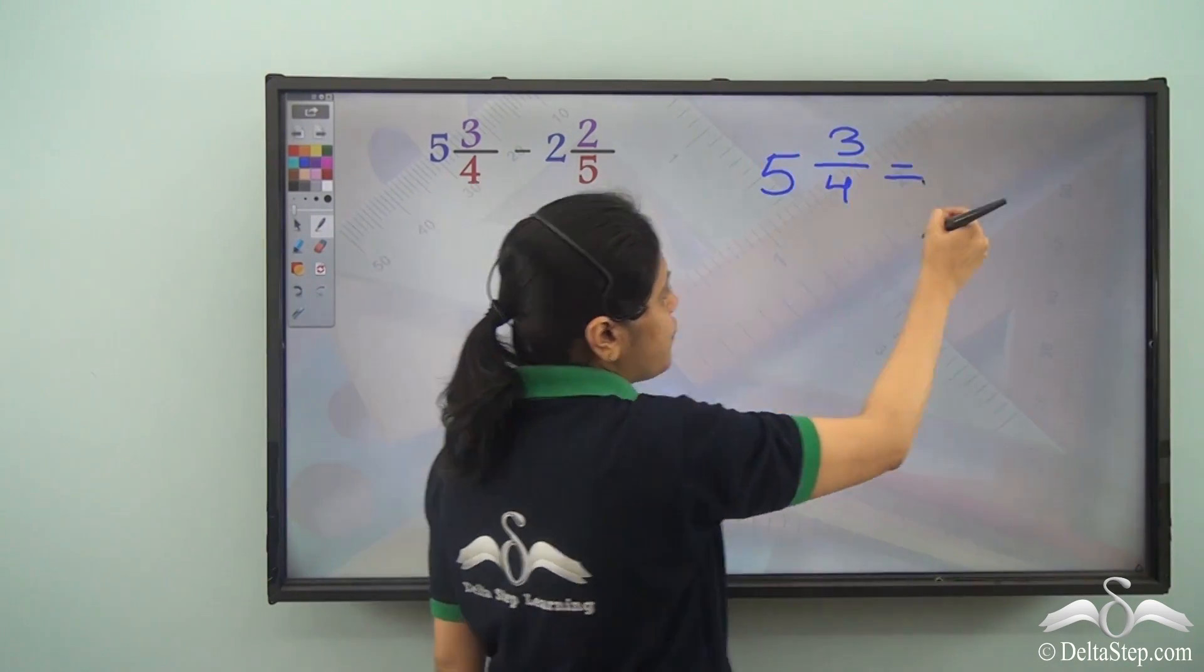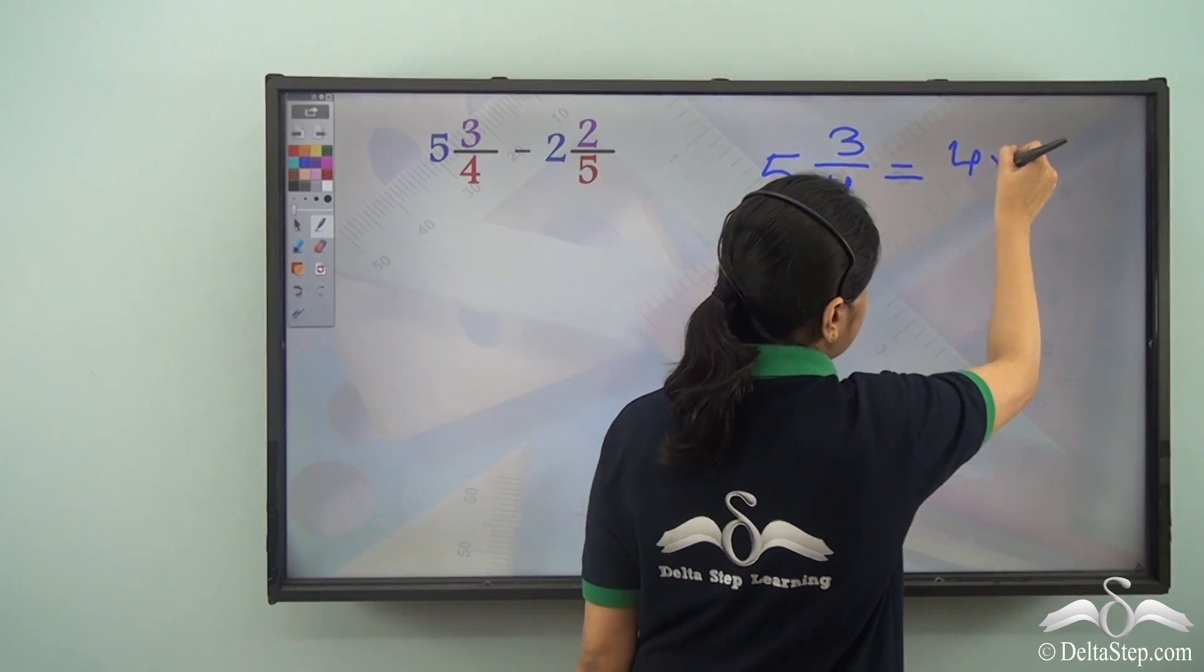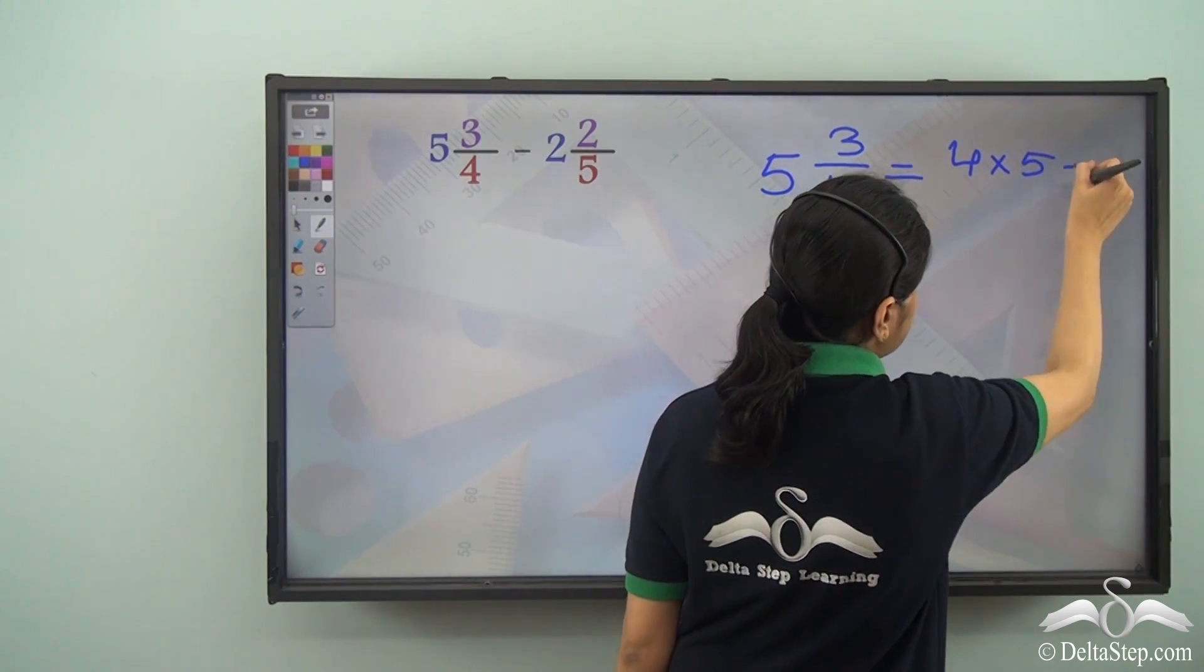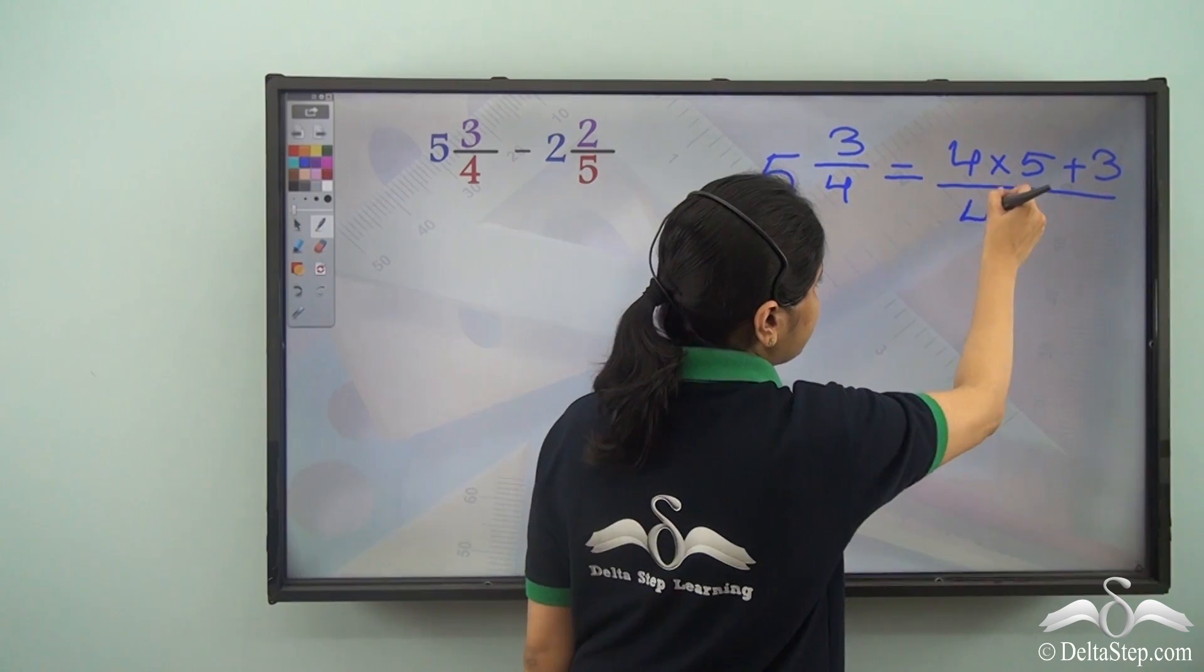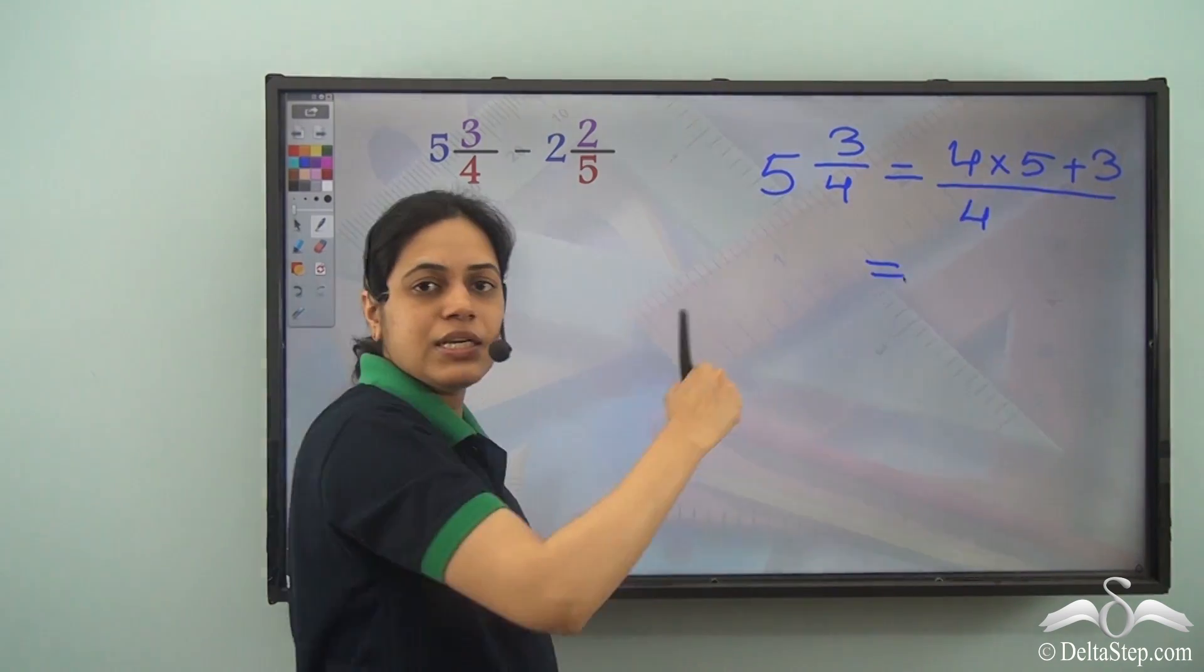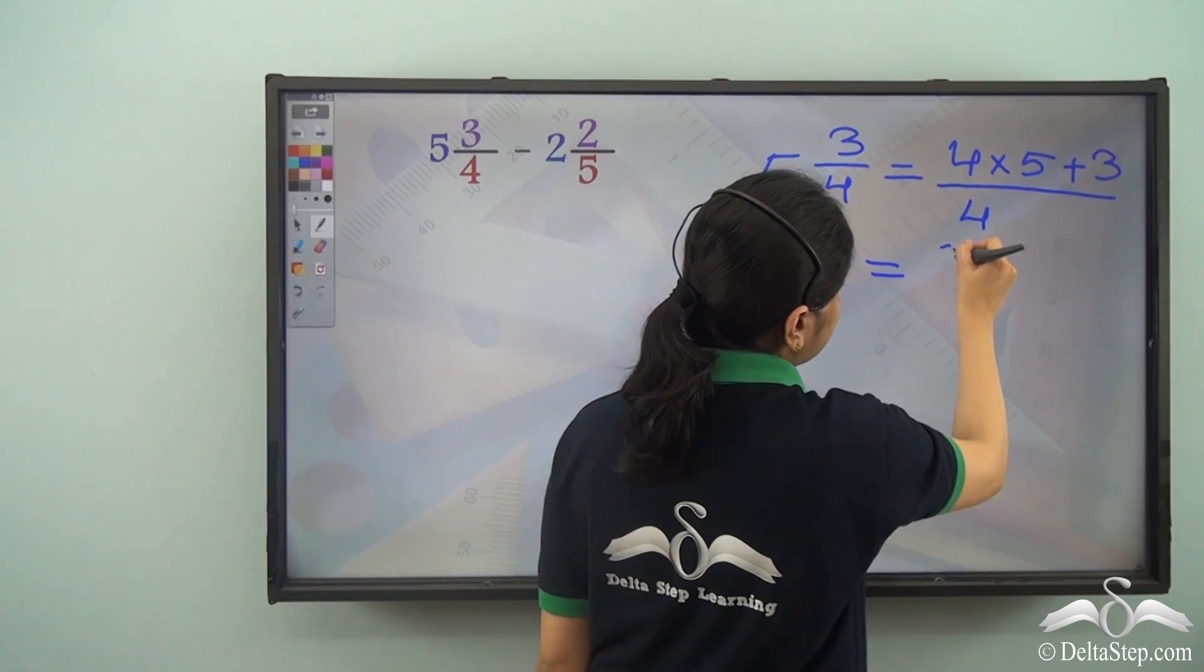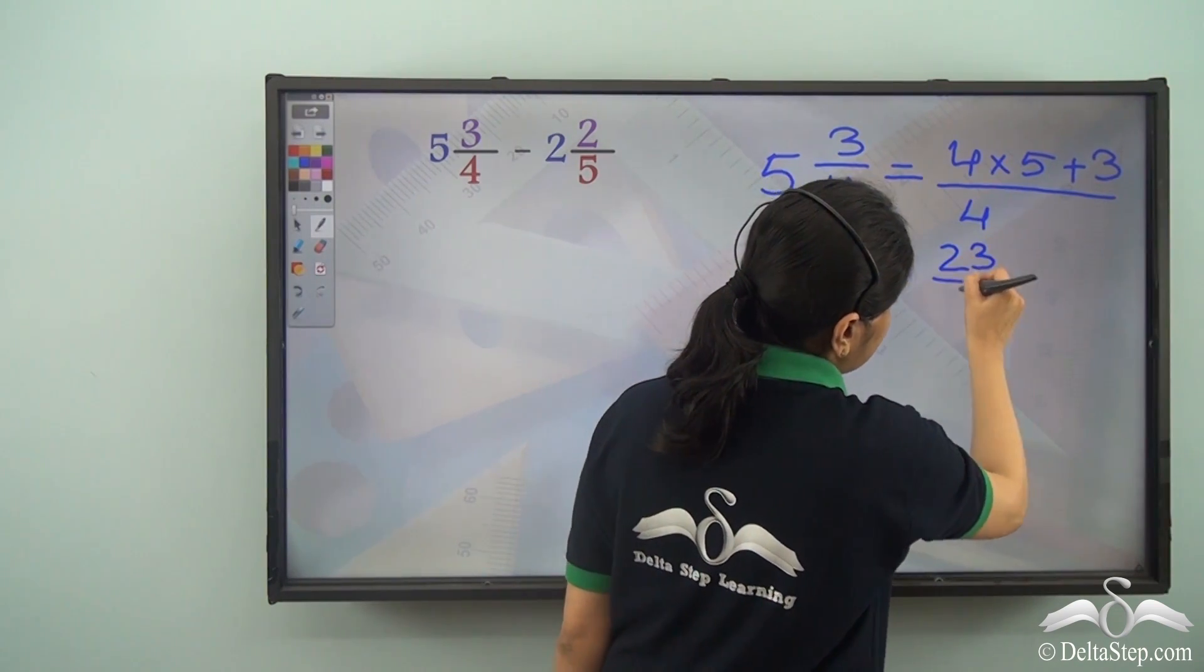This is equal to 4 into 5 plus 3 divided by 4. Now 4 into 5 is 20, 20 plus 3 is 23.